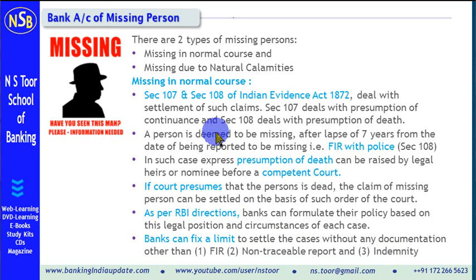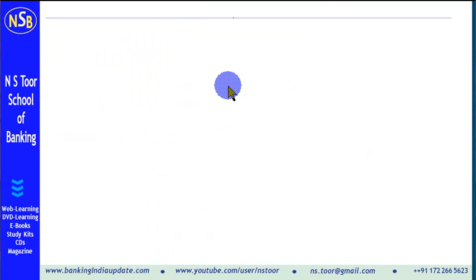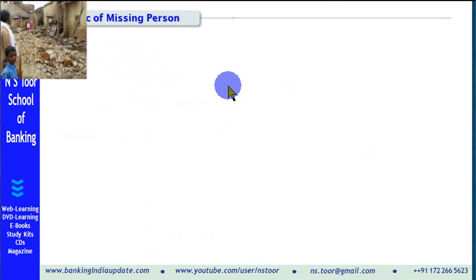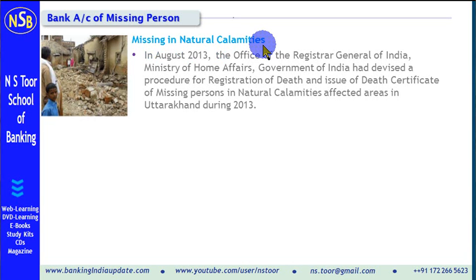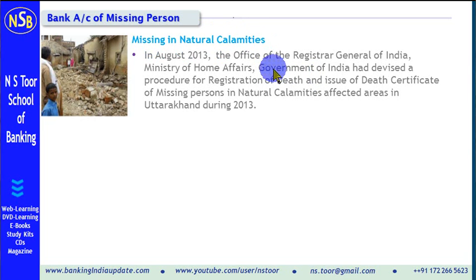This is how the claims in respect of persons missing in normal course are to be handled by banks. Now, let us go to the second situation — those persons who are missing as a result of natural calamities. Where a person is missing in a natural calamity, there are Government of India guidelines.